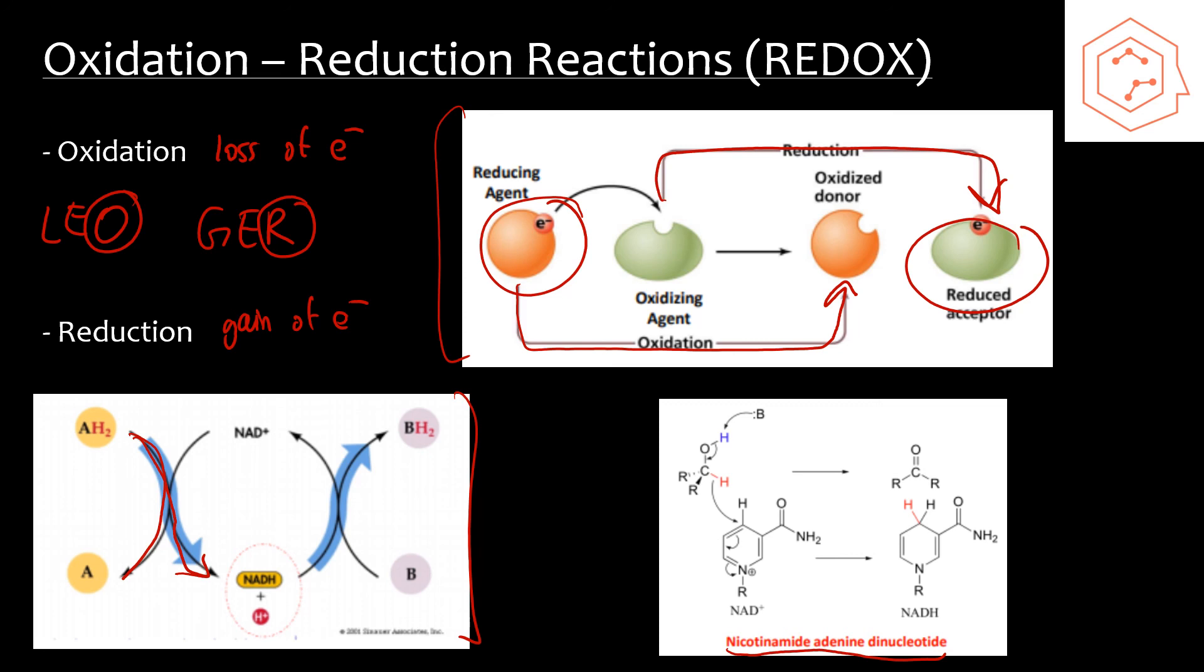Once it's oxidized, it will become NAD+, and then it'll be ready to accept electrons from a reducing agent, something that will give it the electron.